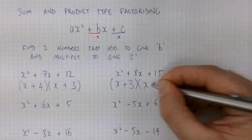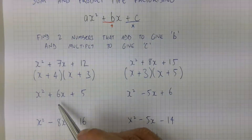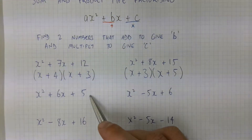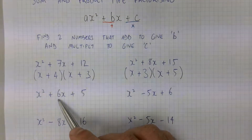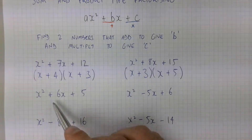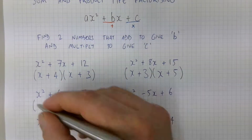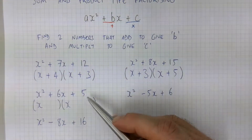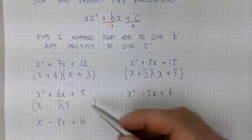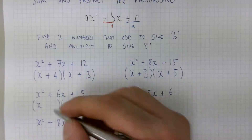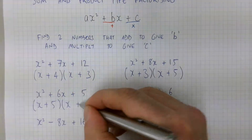This next one is a little bit trickier because we're finding a number that multiplies to 5 but adds to give us the larger value of 6. Set up your brackets with x at the front. What two numbers multiply to give 5? The only factors of 5 are 1 and 5, and 1 + 5 = 6 — that's it! Because these are positive values, we add a plus sign in the middle of both brackets: (x + 1)(x + 5).